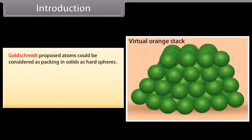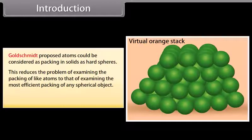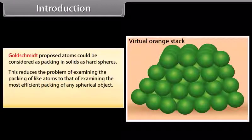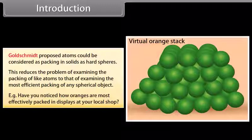Goldschmidt proposed that atoms could be considered as packing in solids as hard spheres. This reduces the problem of examining the packing of like atoms to that of examining the most efficient packing of any spherical object. For example, have you noticed how oranges are most effectively packed in displays at your local shop?